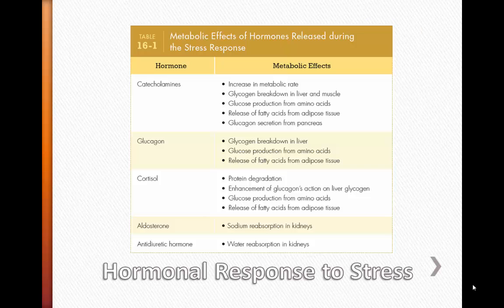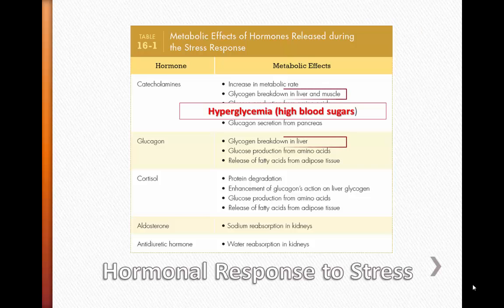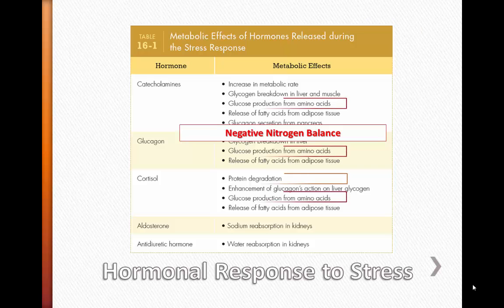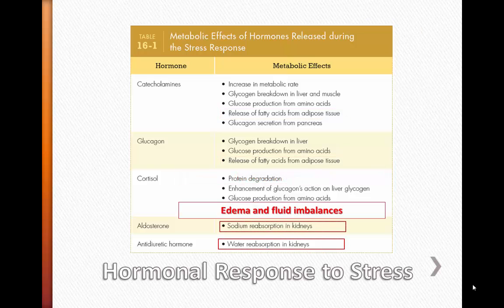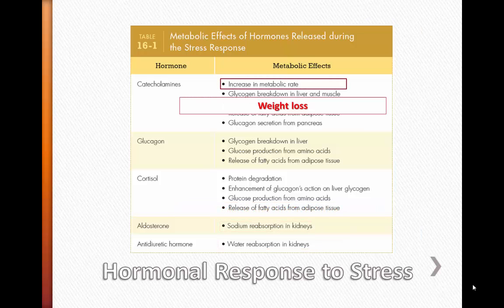The reason for these hormonal responses is to break down our nutrient stores in order to mobilize the nutrients. By mobilizing the energy nutrients into the bloodstream, it allows for immediate response to provide energy for the functions necessary to fight off infection or heal tissue. The problem is when this hormonal response continues too long. When glycogen stores are broken down, it increases blood sugars, which is called hyperglycemia. When protein is broken down to convert amino acids into glucose, the patient ends up in negative nitrogen balance and has difficulty fighting off infection and healing wounds. When fat is broken down and released into blood, we see hypertriglyceridemia. When sodium and water is retained, edema and fluid imbalances occur. And when metabolic rate increases, we run the risk of weight loss and poor healing if we're not able to meet that high calorie demand.